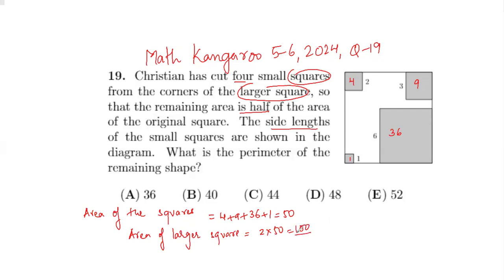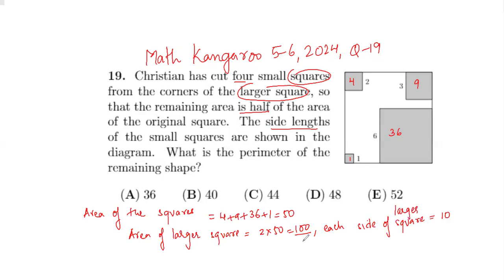If you're not getting a square number — like if it's 90 or not a perfect square — that means a calculation or interpretation is wrong, so redo it. Since the area of the larger square is 100, each side of the larger square will be 10, because 10 times 10 gives 100.